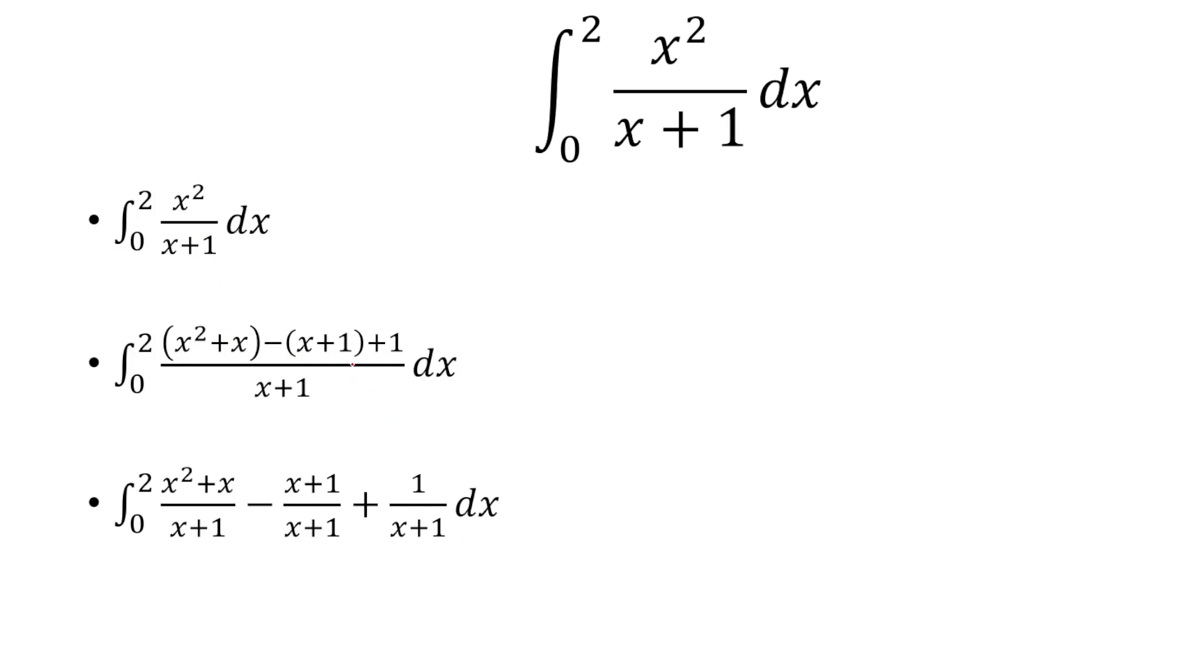And the top here simplifies to x squared because we have x minus x, and this is a negative 1 plus 1. So those cancel out and you're left with x squared. So that's just x minus 1 plus 1 over x plus 1.